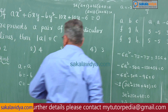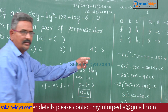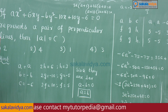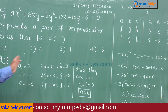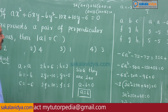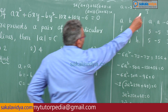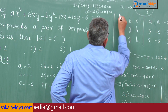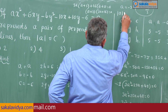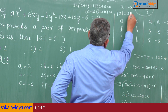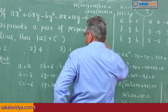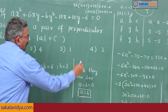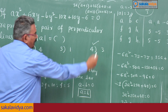Looking at the options, there are no fractional values, so we can neglect -16/3. We need the modulus of A, which is 3. Therefore the fourth option is correct.